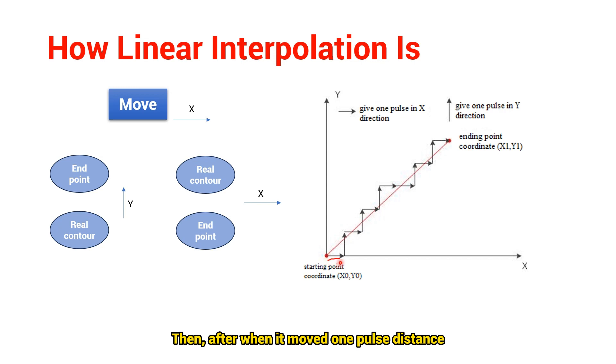Then, after when it moved one pulse distance, find that the terminal point is upper the real contour. Next, it needs to give one pulse in y direction. That is, it moves one relative distance in y. At this time, if the terminal is also below the actual contour, continuing to move in y, until it is above the real contour.